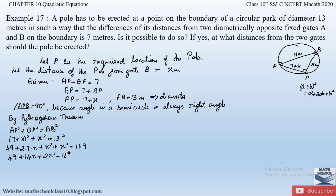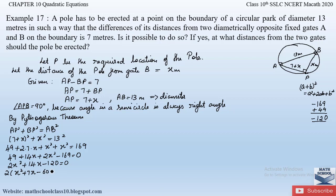Simplifying: 2x² + 14x + 49 − 169 = 0, which gives 2x² + 14x − 120 = 0. Taking 2 as common factor: 2(x² + 7x − 60) = 0. Dividing both sides by 2, we obtain the quadratic equation x² + 7x − 60 = 0.